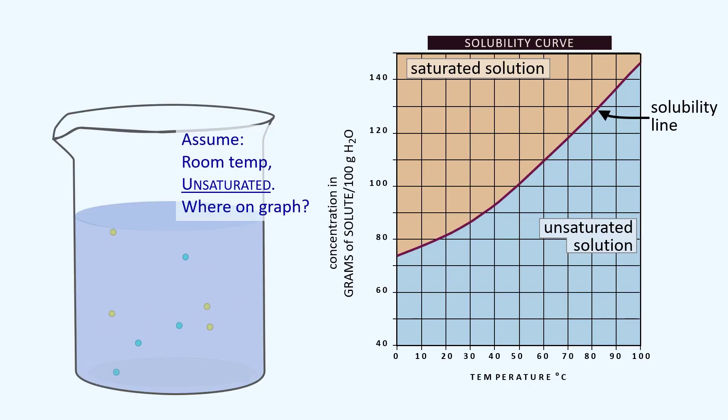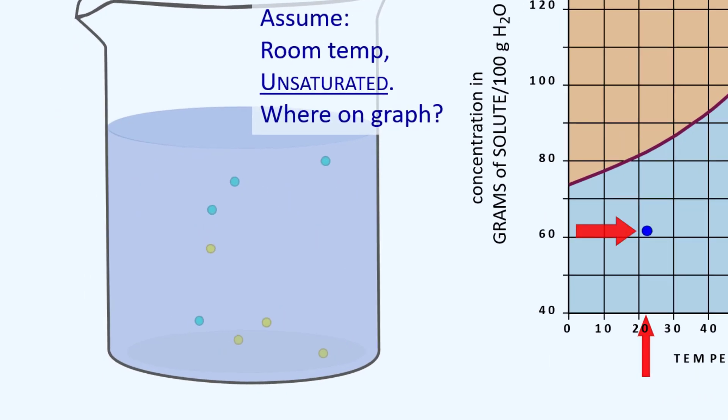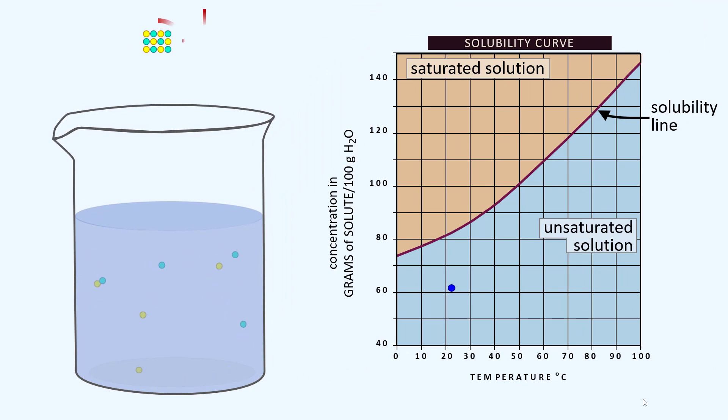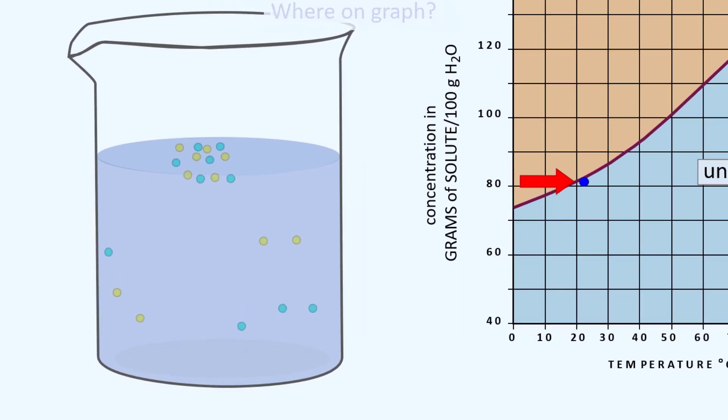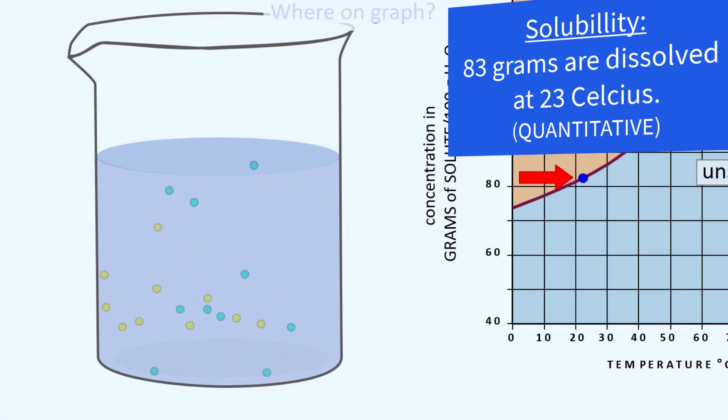Let's say you're at room temperature and unsaturated. Where on the graph would you be? About 22 or 23 degrees is room temperature and we're going to be below the solubility line. Now assume that adding this amount will result in maximum dissolved solute. If we drop this in and it dissolves, we are now at the maximum amount that can be dissolved. So we are now on the solubility curve. We are both at solubility and saturation.